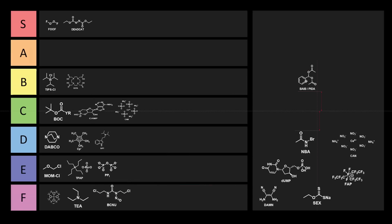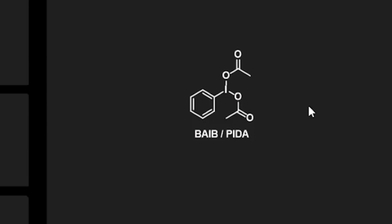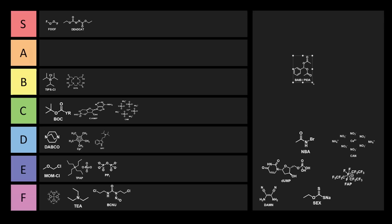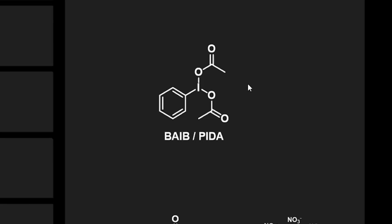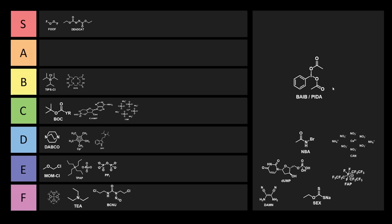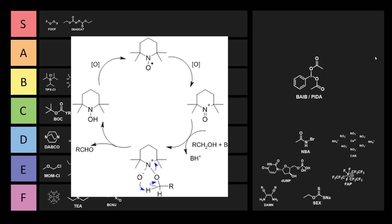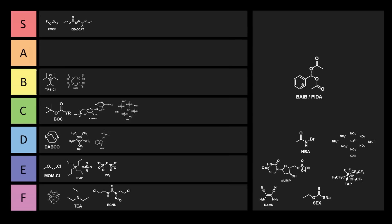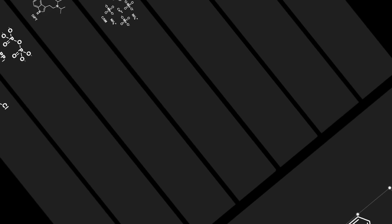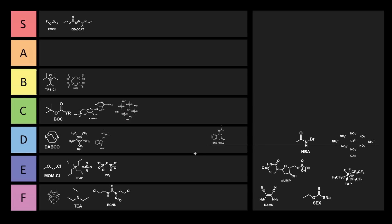Okay, here we have BAIB or PIDA. BAIB stands for bis(acetoxyiodo)benzene and PIDA stands for phenyliodine(III) diacetate. This is a hypervalent iodine(III) oxidant frequently seen in organic chemistry. The most common reaction where people see this is for the TEMPO-BAIB oxidation, which reoxidizes TEMPO, a catalyst for these oxidations. Oh PIDA, you're such a babe. We could put this one right in F tier.